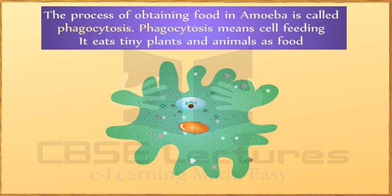The food vacuole has digestive enzymes which convert the food into small and soluble molecules. Third, absorption — the digested food is absorbed directly into the cytoplasm by diffusion. Fourth, assimilation — food is absorbed to obtain energy through respiration and to make parts of the amoeba cell, leading to cell growth.